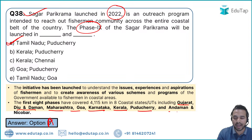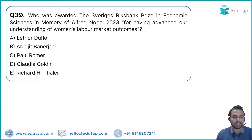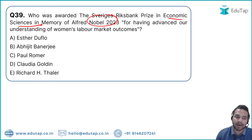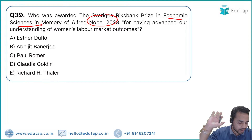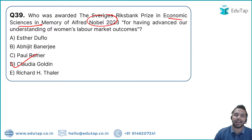Question 42: For the Nobel Prize in Economic Sciences 2023, the mnemonic is 'gold medal.' Claudia Goldin won the Nobel Prize in Economic Sciences — Option D.